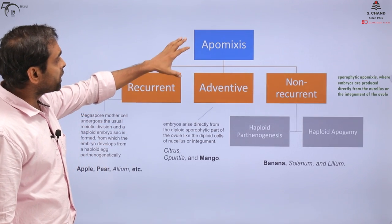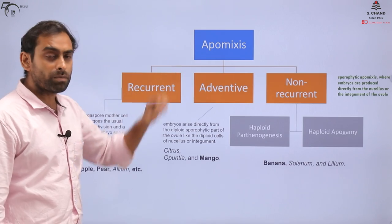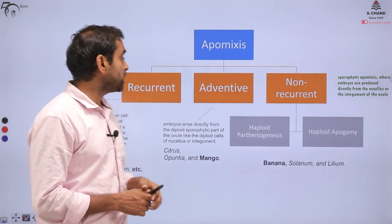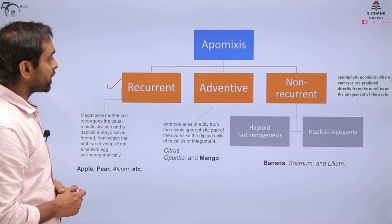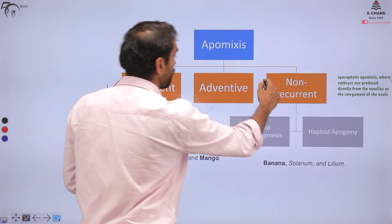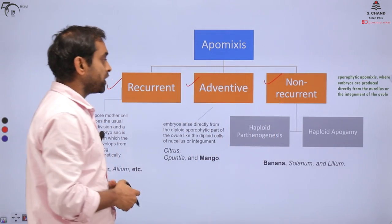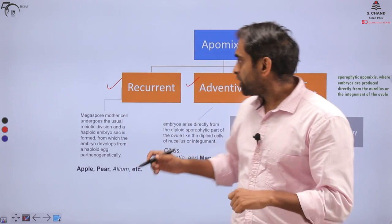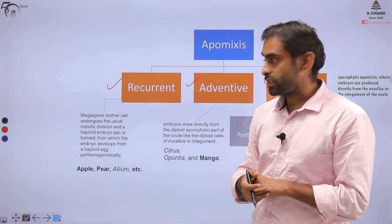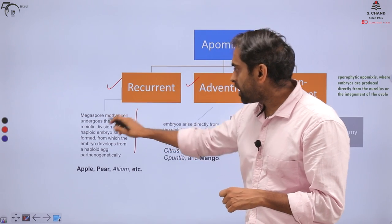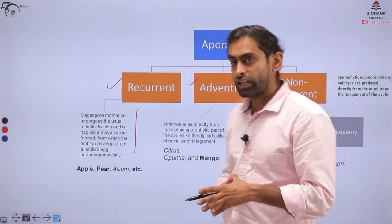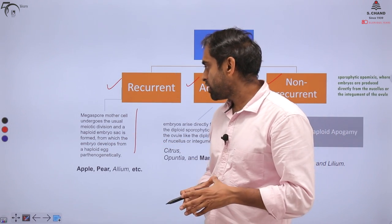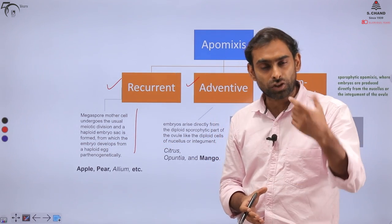Now let us look at the types of Apomyxis. If we talk about vegetative embryo formation, it can happen in three ways. One is called Recurrent, another is called Non-recurrent, and the third one is called Adventitive.